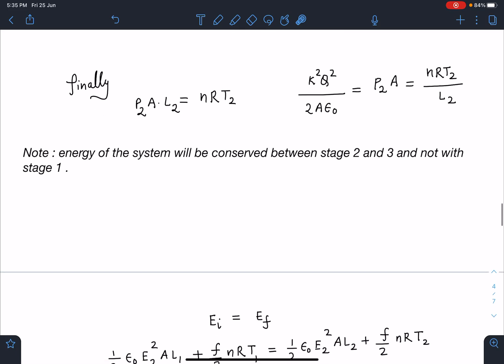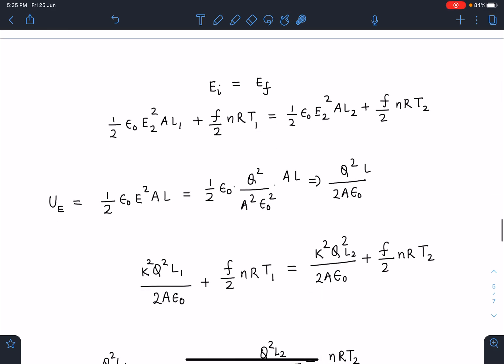So now if I apply this initial energy and final energy you can see here that energy density formula I can use: energy stored in unit volume is half epsilon not E squared multiplied by the volume so that will be the electrical potential energy and this is the internal energy of the gas I can write f by 2 NRT. Similarly here I can write finally electrical potential energy stored in the final configuration and this is the internal energy of the gas and this must be equal.